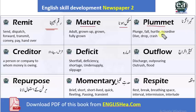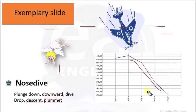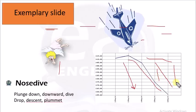'Plummet' ka matlab hota hai niche girna — jaise agar mein example doon: nose dive, fall down, dive. Nose dive ki example badi strong si hai. Bilkul 90 angle se niche gir jana kisi cheez ka — jaise jahaz nose dive karta hai. Matlab iske ishtirak se imkaan na ho ke aise niche aaye, balkay bilkul hi 90 angle pe niche aaye — nose dive, niche girna.